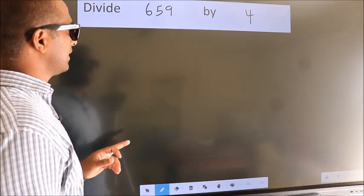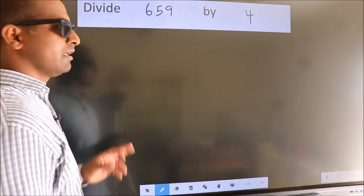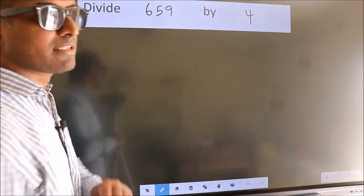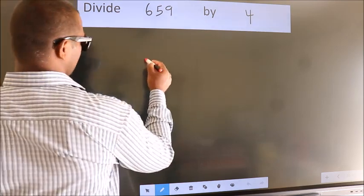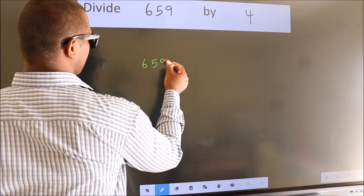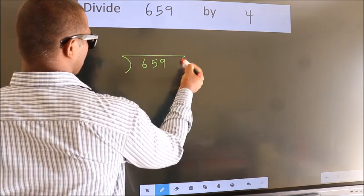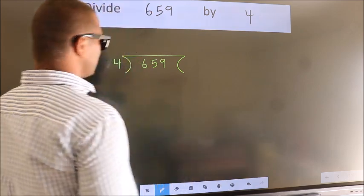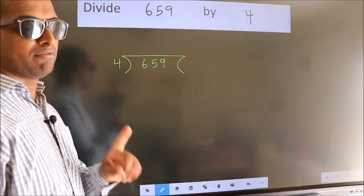Divide 659 by 4. To do this division we should frame it in this way. 659 here, 4 here. This is your step 1.